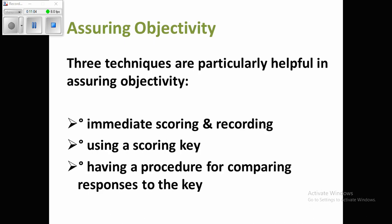Assuring objectivity: as with test construction, one of the keys to successfully scoring a test is objectivity. By setting certain standards and checking certain rules, the teacher can be sure that scoring has been objective and students have been treated fairly. There are basically three techniques to check the objectivity of scoring.